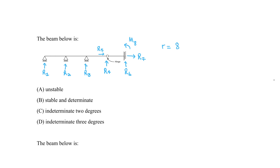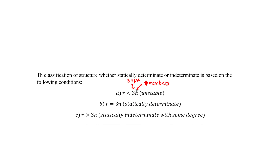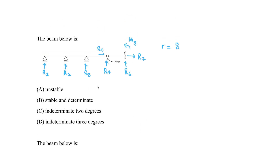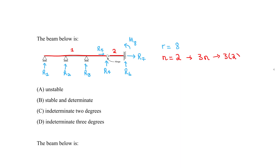Now let's find the number of equations. Each section we analyze supports three equations. So we multiply 3 by the number of members N. In this beam, the hinge separates the structure into two members. So N equals 2, and the total number of equations is 3 times 2, which equals 6.